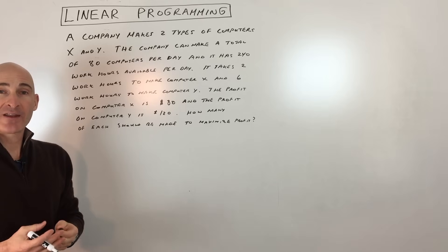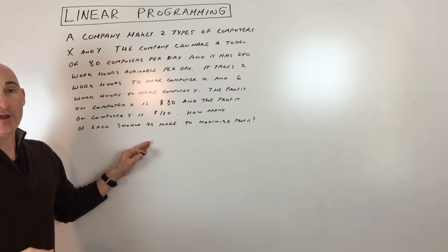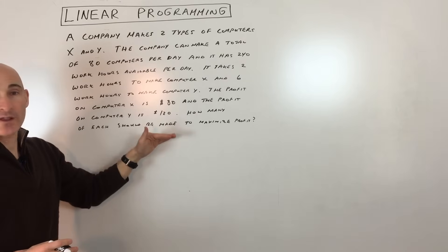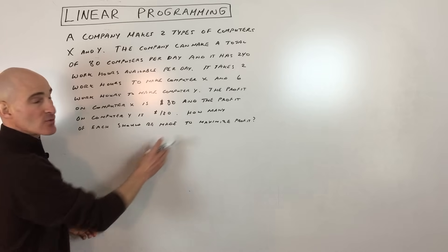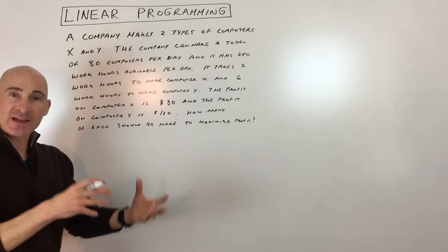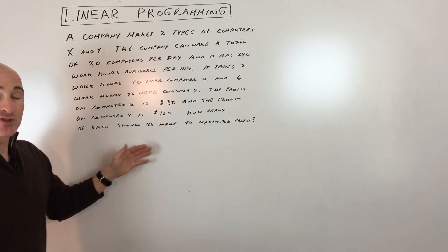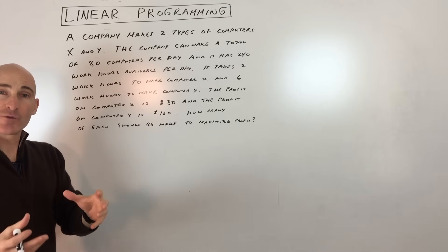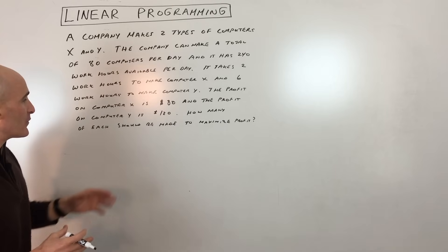There's a lot going on in this problem, and there usually is with linear programming type problems. What I recommend is to read it through quickly first, then go to that last sentence — that's what you're trying to optimize. You're either trying to maximize something or minimize something. Write that equation first because it tells you what your variables are and helps frame the problem.